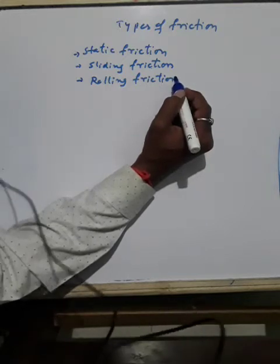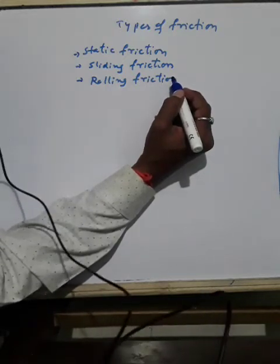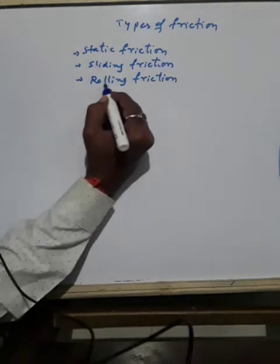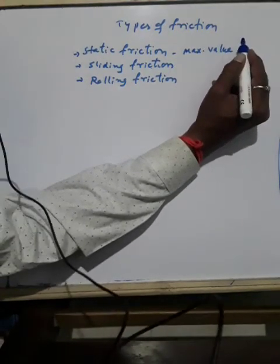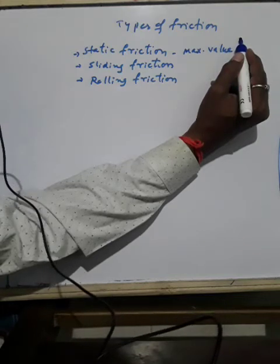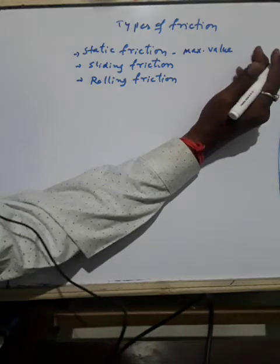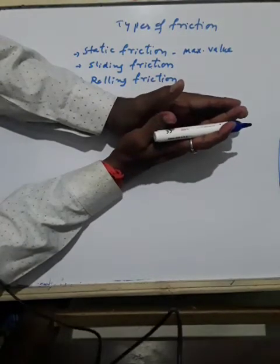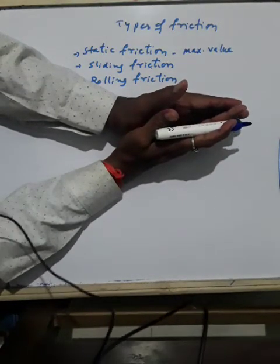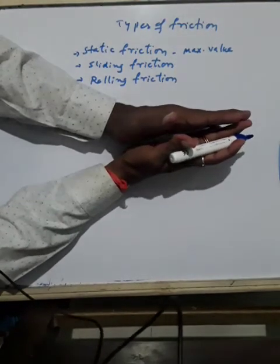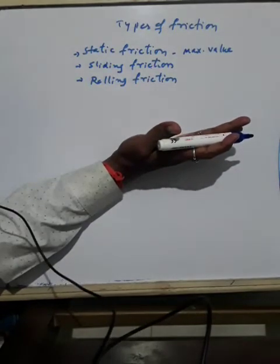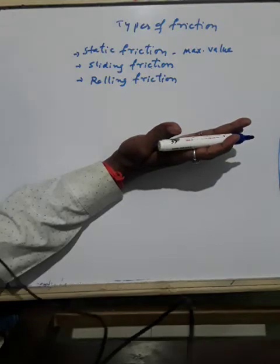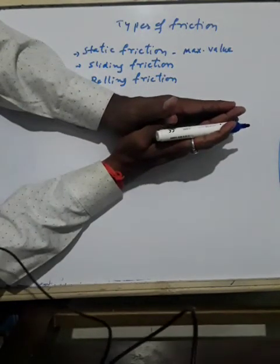What is static friction? Static friction is the maximum value of friction force between two surfaces which can prevent one surface from sliding over the other. Suppose these are two objects — one surface will prevent the other surface from sliding. It keeps the object stationary when it is placed on a surface.